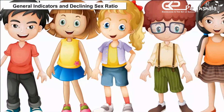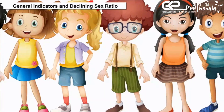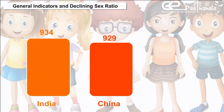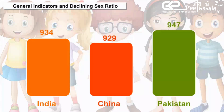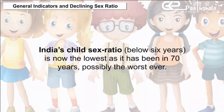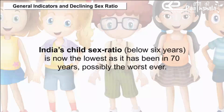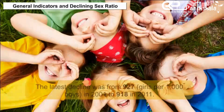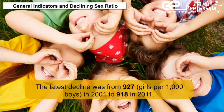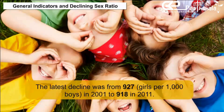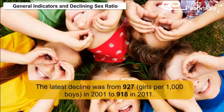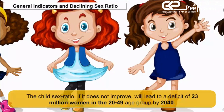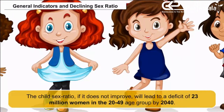General Indicators and Declining Sex Ratio. All three countries have a declining sex ratio: 934 in India, 929 in China, and 947 in Pakistan. India's child sex ratio, i.e., below 6 years, is now the lowest it has been in 70 years, possibly the worst ever. The latest decline was from 927 girls per 1,000 boys in 2001 to 918 in 2011. If the child sex ratio does not improve, it will lead to a deficit of 23 million women in the 22–49 age group by 2040.